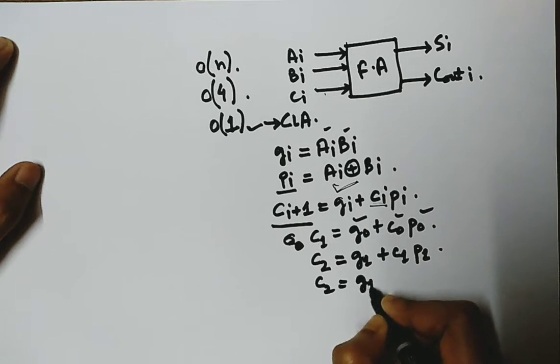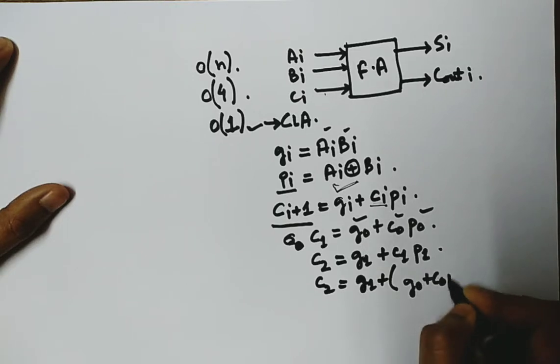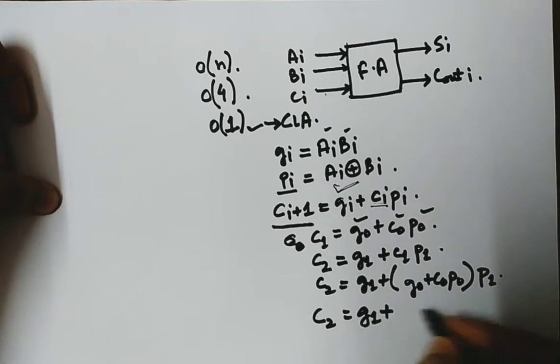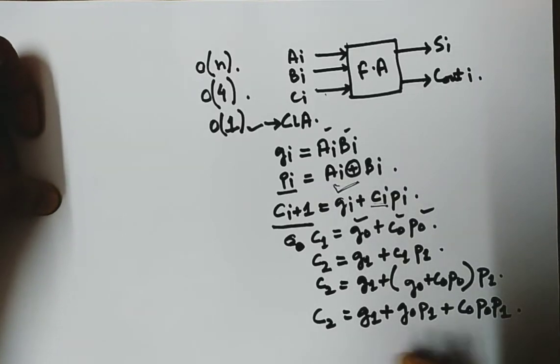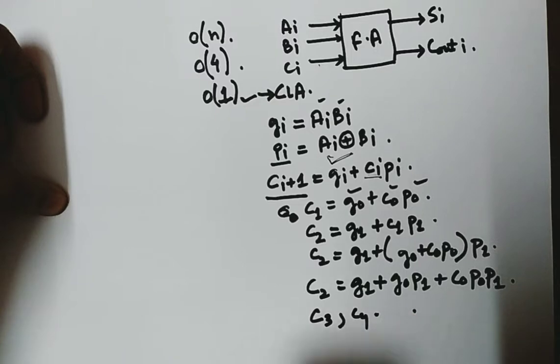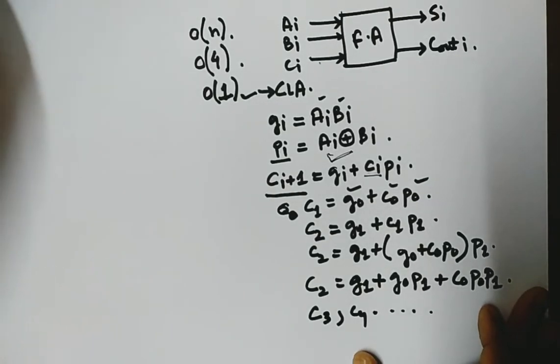C2 equal to G1 plus G0 plus C0 P0 into P1. C2 equal to G1 plus G0 P1 plus this. So we get C2. In this way we can get C3 and C4 and so on if there are more carries.